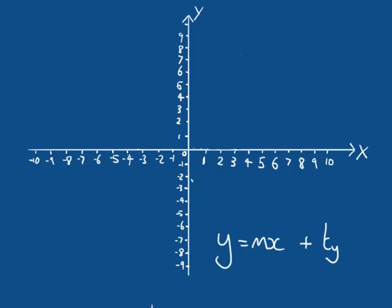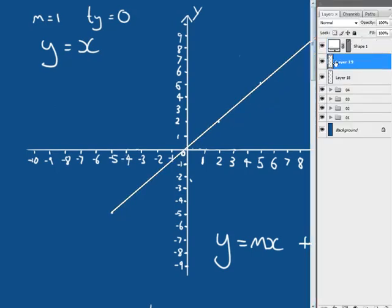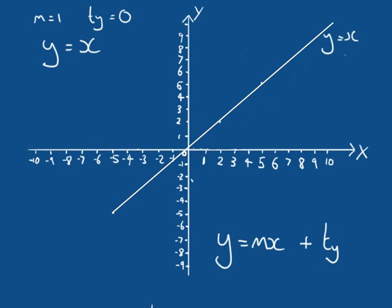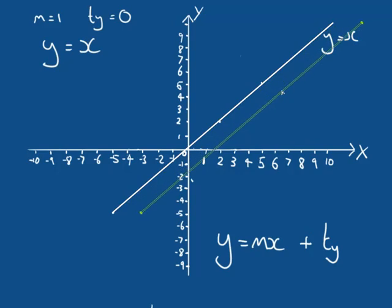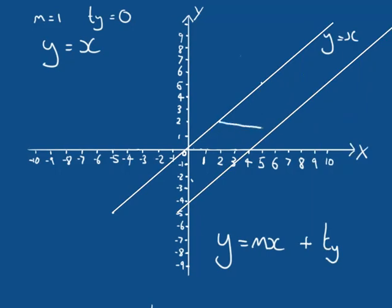Let's go back to Y equals X, where M equals 1 and TY equals 0. Say I wanted to translate this four units to the right — I can duplicate the line and translate it four units to the right. We're still taking some value in X, plugging it into some new equation, and generating a value in Y. With Y equals M(X minus TX) plus TY and TX equals 4, our equation tells us to subtract 4 from X.